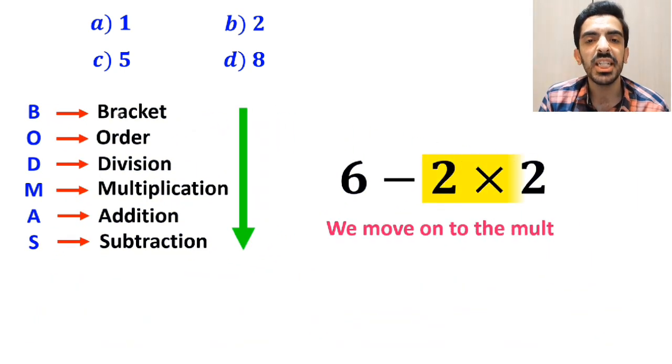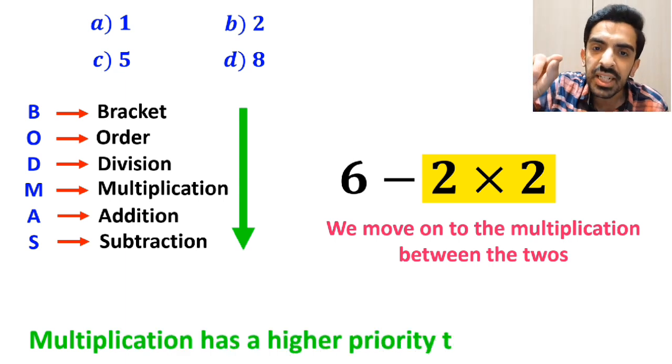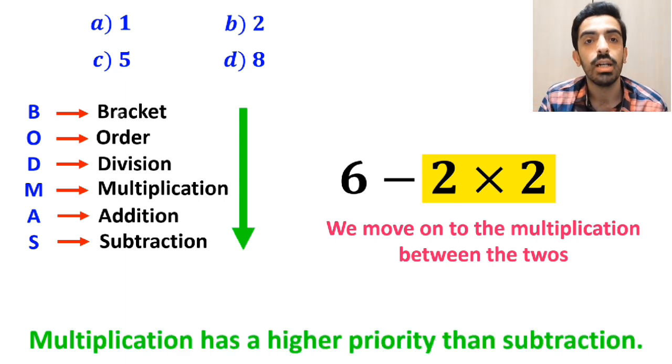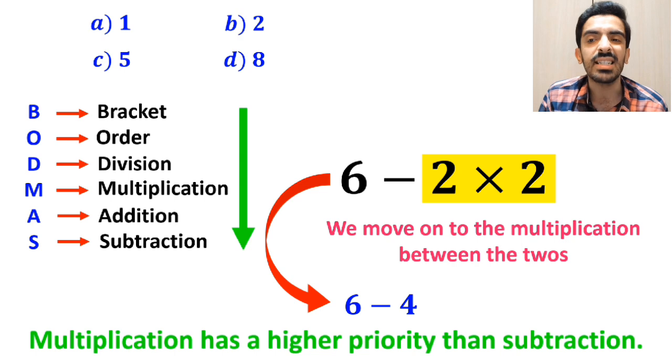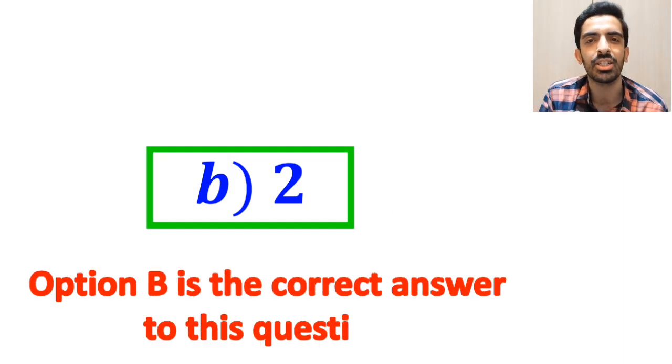Next, we move on to the multiplication between the 2s, because multiplication has a higher priority than subtraction. So we rewrite this expression as 6 minus 4, and finally we get the answer 2. Therefore, option A is the correct answer to this question.